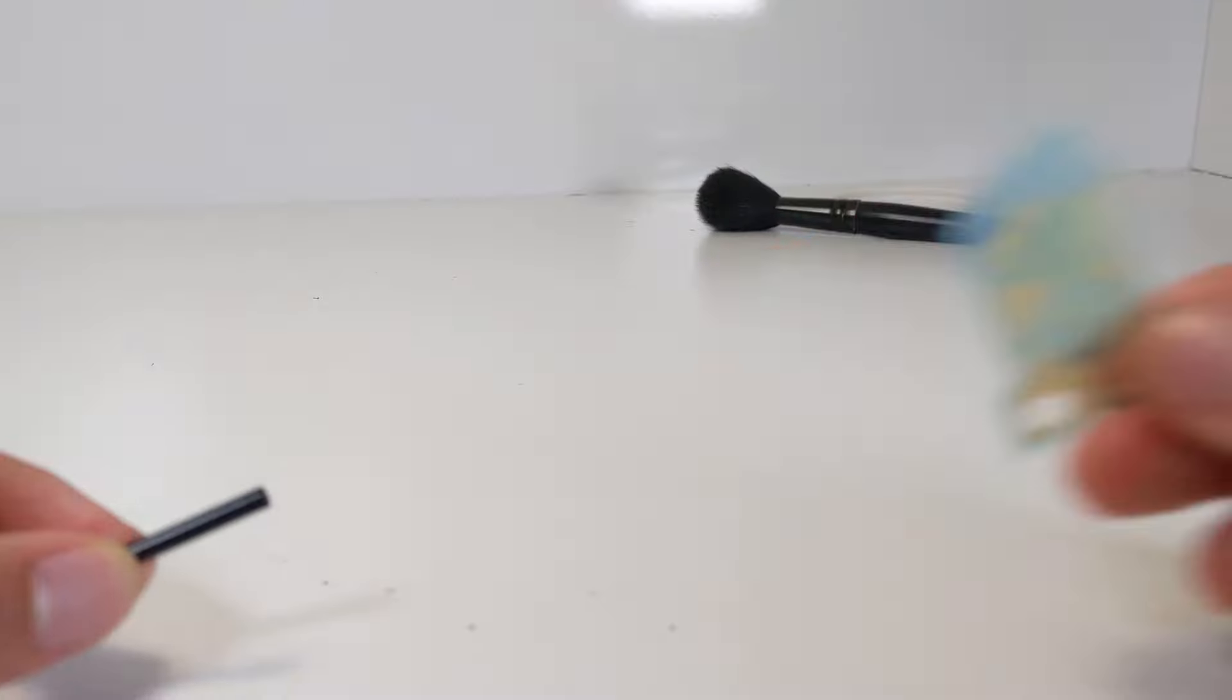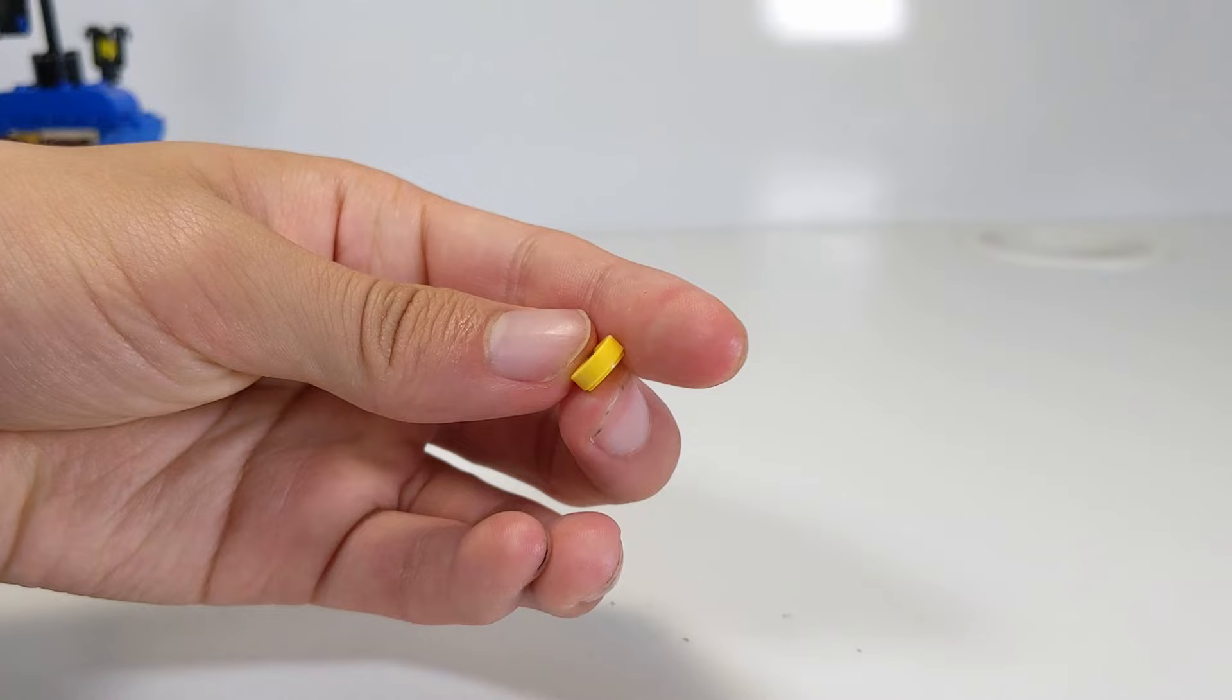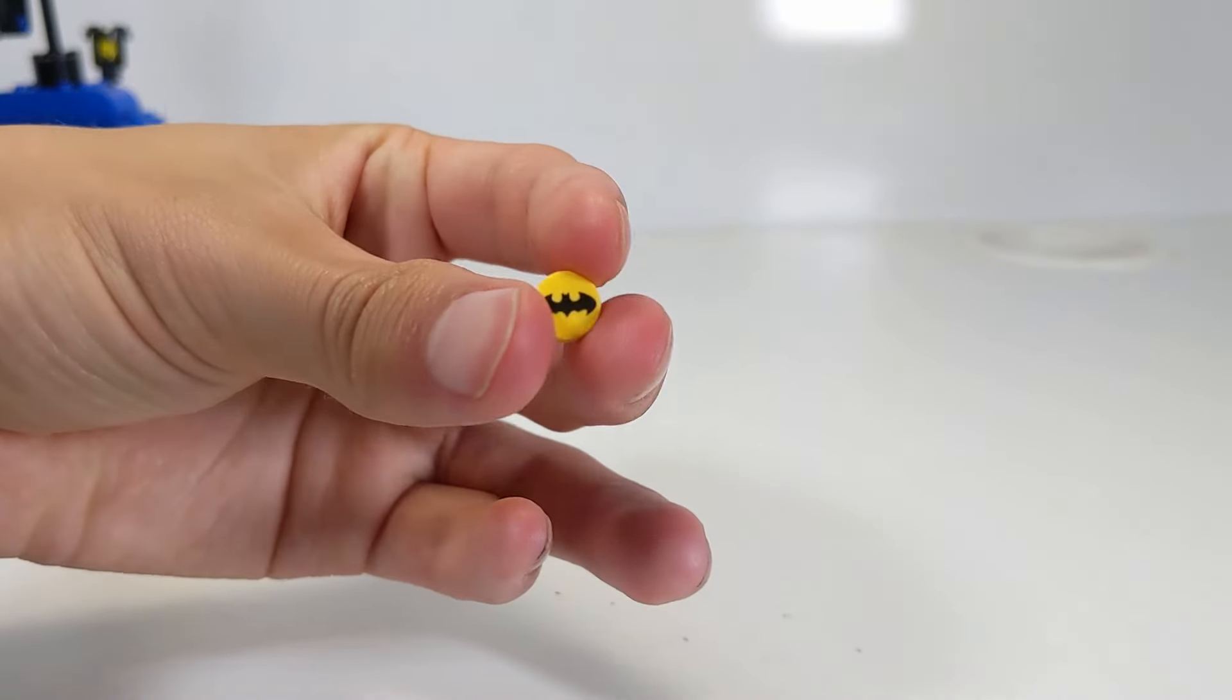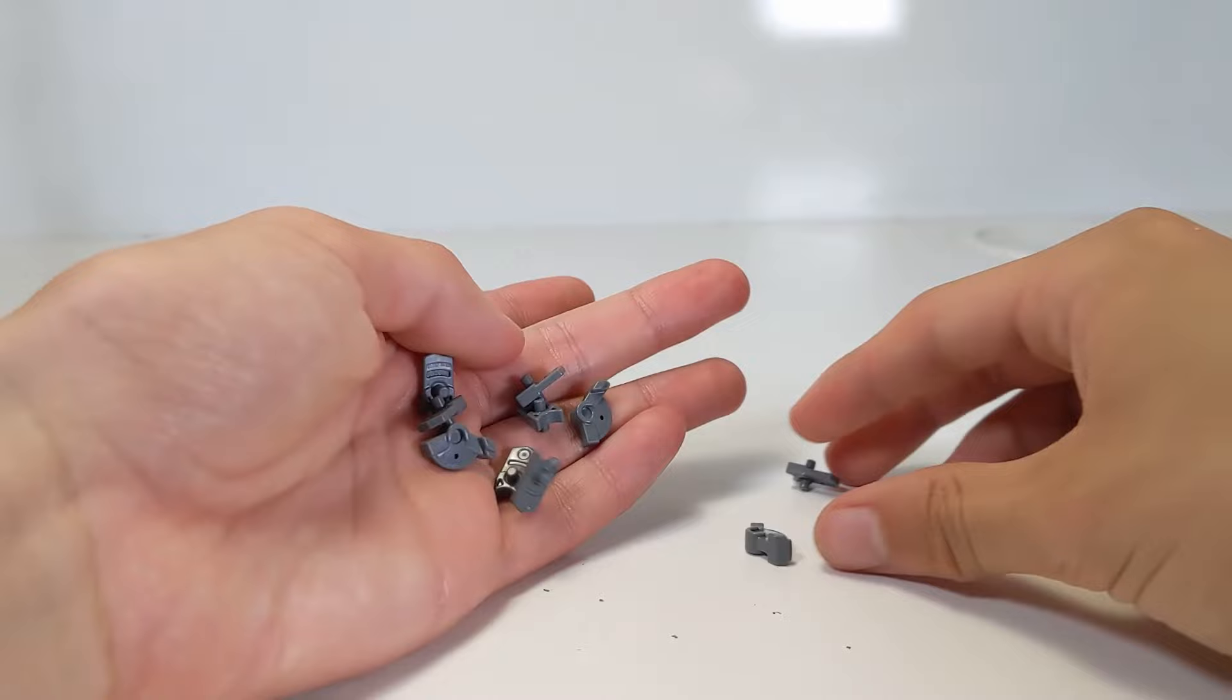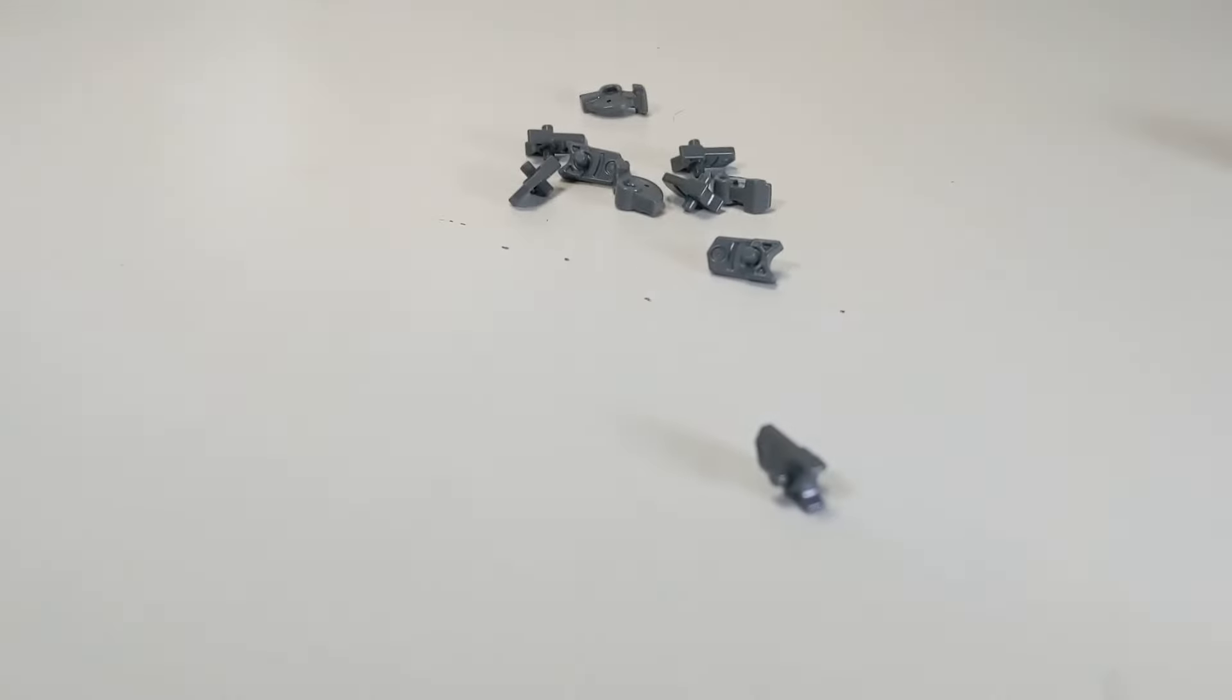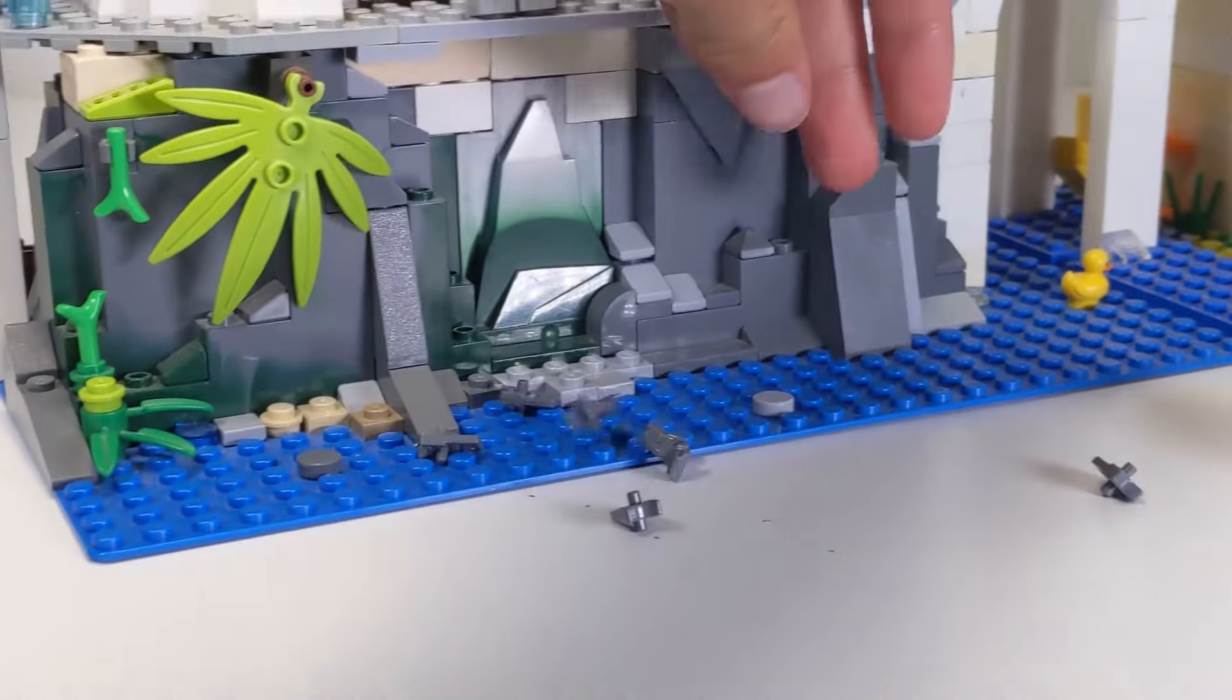With the extra forbidden spinjitzu scrolls, you can make another forbidden spinjitzu scroll, or you can make a pirate flag for a ship. There's also this Batman one by one print that can be used to make a bat button from the LEGO Batman movie. And then there are these trigger pieces, which are pretty much useless outside of being stud shooter triggers, or so I thought.